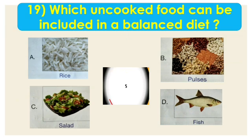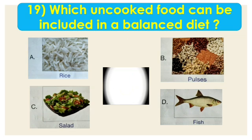Question number 19: which uncooked food can be included in a balanced diet? Options are A. Rice, B. Pulses, C. Salad, and D. Fish. Uncooked food means food you can eat raw. Can you eat rice raw? No. Pulses? No. Fish? No. So the right answer is C, Salad.